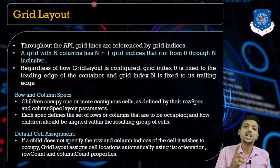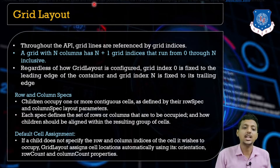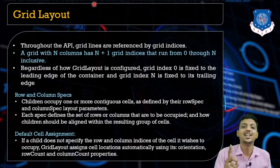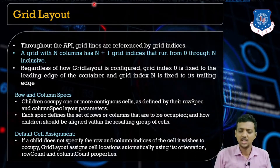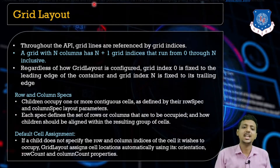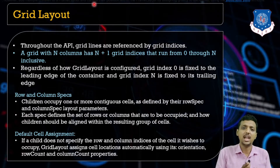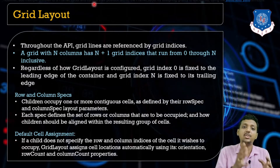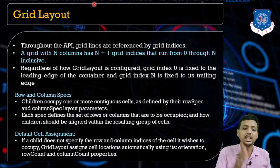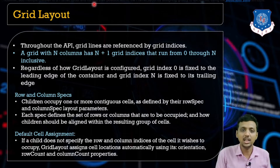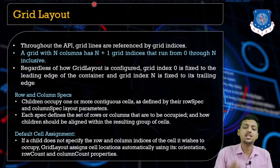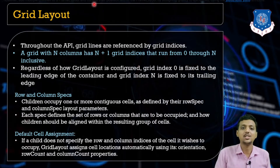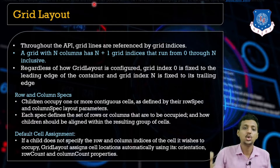Remember: the grid width and column has n+1 grid lines. That means if the number of columns is three, it must contain four indices starting from zero to n.